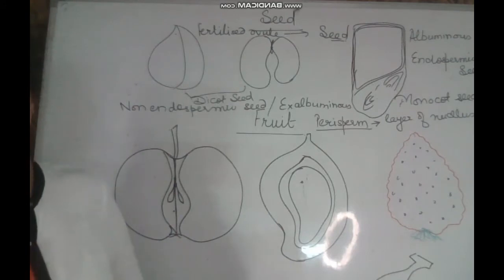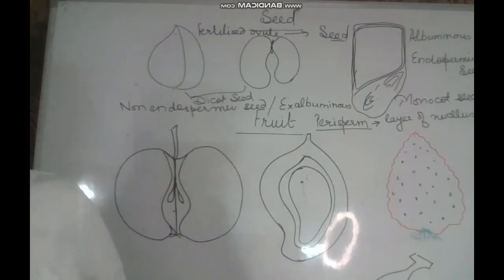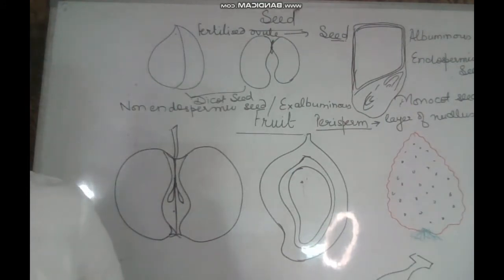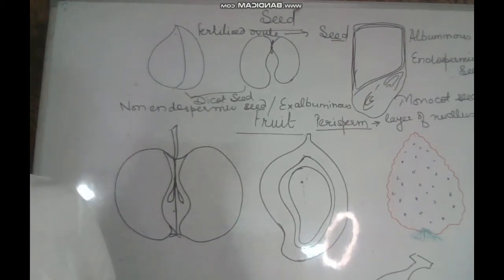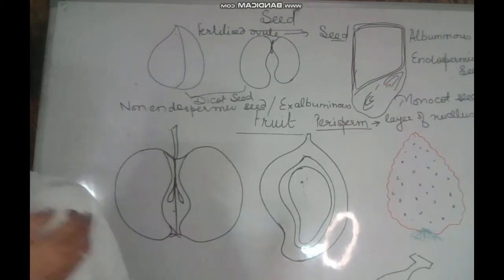The dormancy of the seed can be related to the presence of certain hormones. Abscisic acid is present in the seed — it prevents germination and is responsible for the dormancy of the seed, actually protecting the seed from unfavorable conditions. When the conditions are favorable, these seeds will germinate. So seeds also help in perennation of the plant. For human beings, these are the basis of agriculture and the basis of our staple diet.